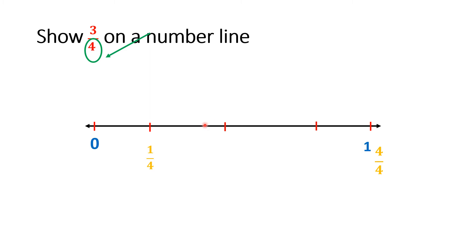Now I have to write the fraction for the second part — the second mark on the number line. For two parts, the numerator will be two, and the denominator is four. So the fraction for the second mark is two-fourths.